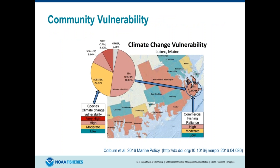I wanted to highlight one of the things you can do with the results. Lisa Colburn, a social scientist at the Northeast Fisheries Science Center, took the results of our climate change vulnerability analysis and extrapolated them out to communities. She looked at communities — for example Lubeck, Maine — to see what that community is currently dependent on: how high is their commercial fishing reliance and what species are they dependent on. For Lubeck, they're dependent mainly on sea urchin and lobster, with a little scallop and clam. She then looked at how vulnerable those species are — sea urchin is in the high vulnerability category and lobster in the moderate — giving an idea of how vulnerability of species could play out at the community level. That paper just came out this month or last month.